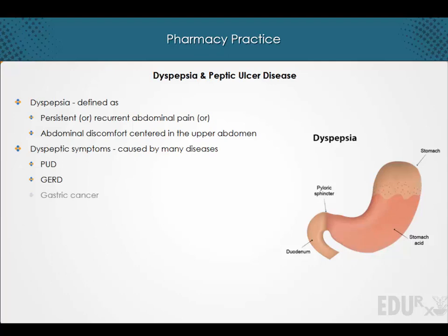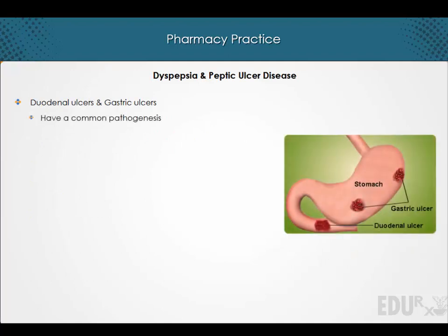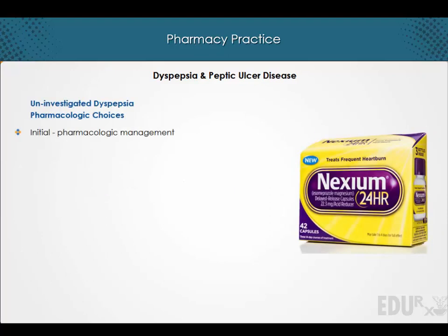Both duodenal ulcers and gastric ulcers have a common pathogenesis but also have distinct features. Although certain drugs can cause ulcers — in particular the non-steroidal anti-inflammatory drugs — the great majority of cases of peptic ulcer disease stem from infection with Helicobacter pylori.